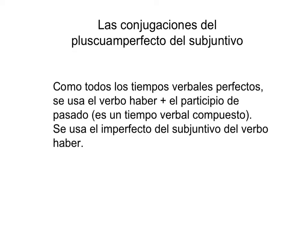En esta lección vamos a revisar las conjugaciones del pluscuamperfecto del subjuntivo. Como todos los tiempos verbales perfectos, se usa el verbo haber con las formas conjugadas — conjugated forms of the verb haber — más el participio de pasado. Es un tiempo verbal compuesto. It's a compound verb tense, so it has two parts: el verbo haber y el participio de pasado.